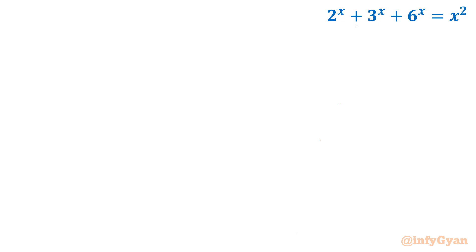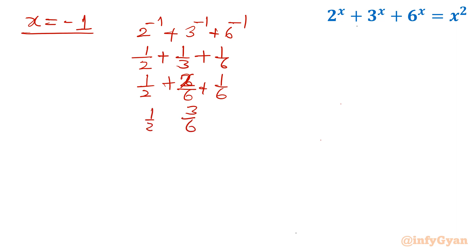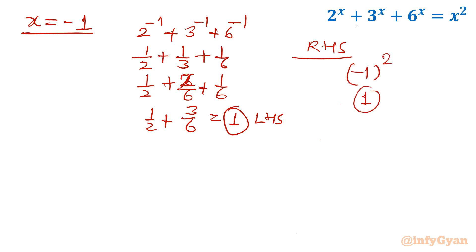Let me evaluate that value. The first negative integer to try is x = −1. Plugging in: 2^(−1) + 3^(−1) + 6^(−1) = 1/2 + 1/3 + 1/6 = 3/6 + 2/6 + 1/6 = 6/6 = 1. LHS = 1. RHS: (−1)² = 1. LHS equals RHS, so x = −1 is the solution.